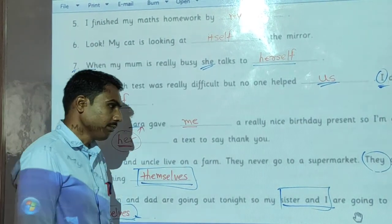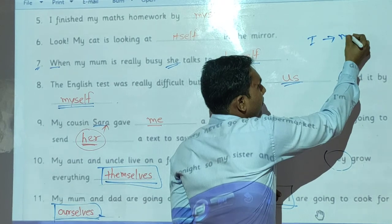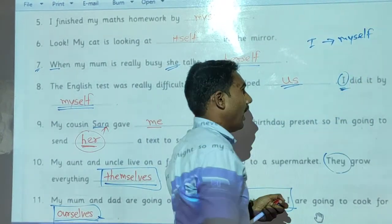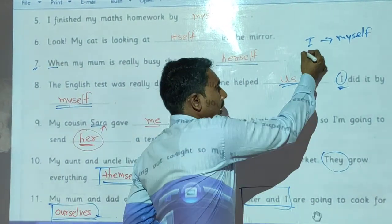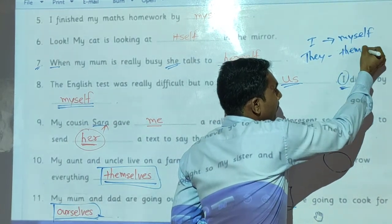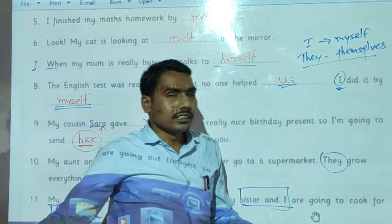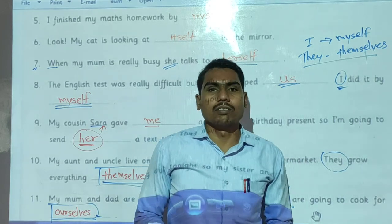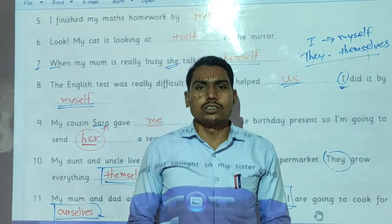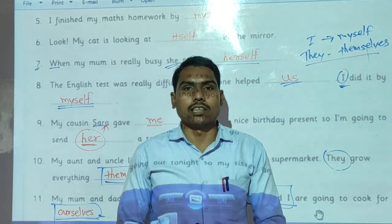We use reflexive pronouns: 'I' for 'myself', 'they' for 'themselves', and in this way we can use any reflexive pronouns or subjective pronouns. I hope you understood all things related with this topic. The remaining part of this lesson we will see in the next video. Thank you.